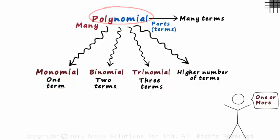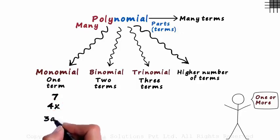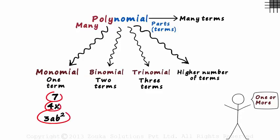Let's look at a few examples of each. The number seven is a monomial. It's just one term. Four x is also a monomial. It's just one term as four and x are multiplied. Even three ab squared is a monomial. And yes, all these expressions are also polynomials.